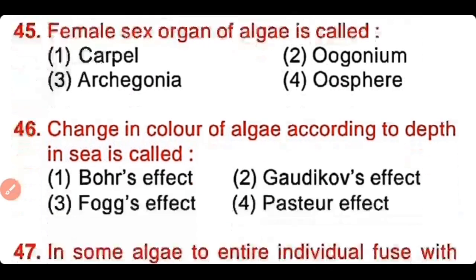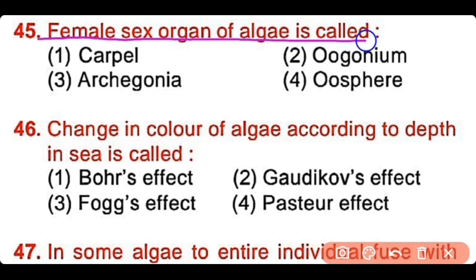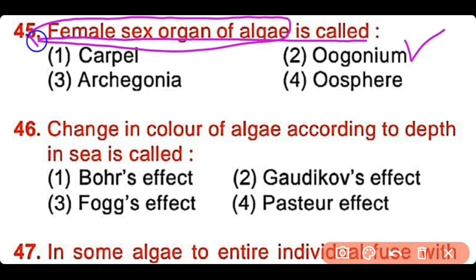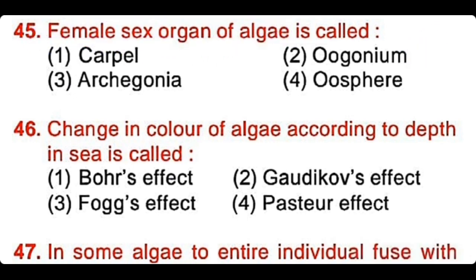Question number 45: The female sex organ of algae is called carpel, oogonium, archegonium, or oosphere? The correct answer is option 2. The female sex organ of algae is known as oogonium.